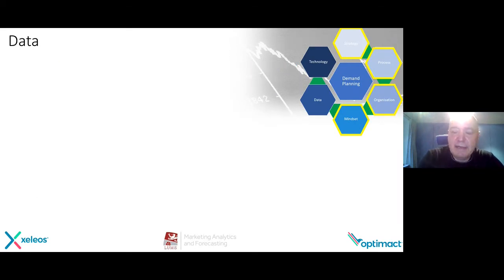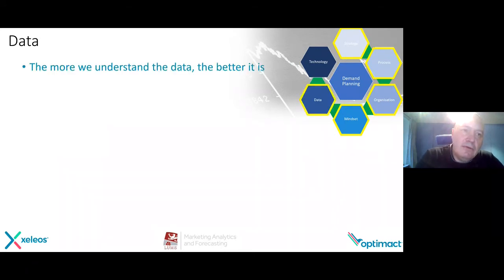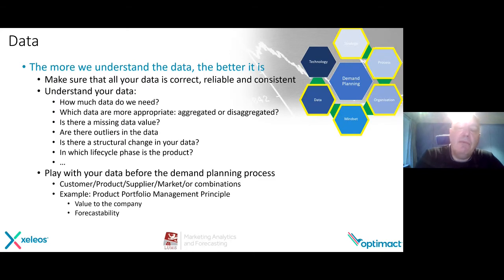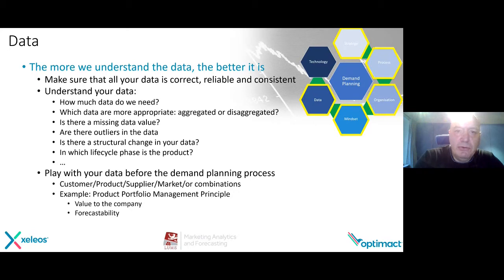For example, customer service has everyday contact with operational people on the customer side and can hear things which are important to analyze. It's not only sales who has contact — people in R&D also have contact with customers. So the mindset should be that all stakeholders, in fact, own the forecast, and whenever you hear something relevant, you need proper communication and reporting so that all that information is part of your overall demand planning and forecasting process. Then we come to the data. The input of supply chain planning tools is data. The more we understand the data, the better it is.